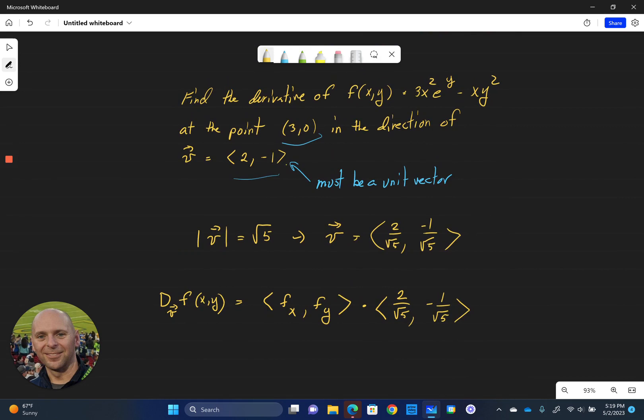We need to find two partials: the partial of f with respect to x and the partial of f with respect to y, so that we can complete this vector here.